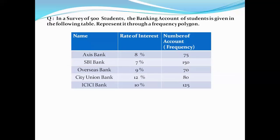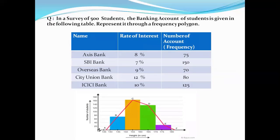The data shows: Axis Bank at 8% interest — 75 students; Overseas Bank at 9% — 70 students; SBI — 150 students; ICICI at 10% — 125 students. On the x-axis you represent the rate of interest, and on the y-axis you represent the number of accounts, which is the frequency. You also need to add the polygon table accordingly. Thank you so much for joining with us. Goodbye to all.